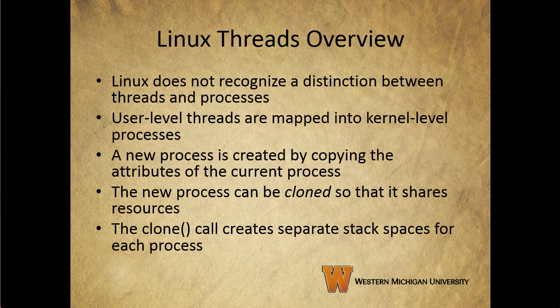To give a brief overview of Linux threads: traditional Unix systems support a single thread of execution per process, while modern Unix systems typically provide support for multiple kernel-level threads per process. User-level threads are mapped into kernel-level processes, and a new process is created by copying the attributes of the current process. This new process can be cloned so that it shares system resources such as files, signal handlers, and virtual memory. However, although cloned processes that are part of the same process group can share the same memory space, they can't share the same user stacks — a clone call creates a separate stack space for each process.